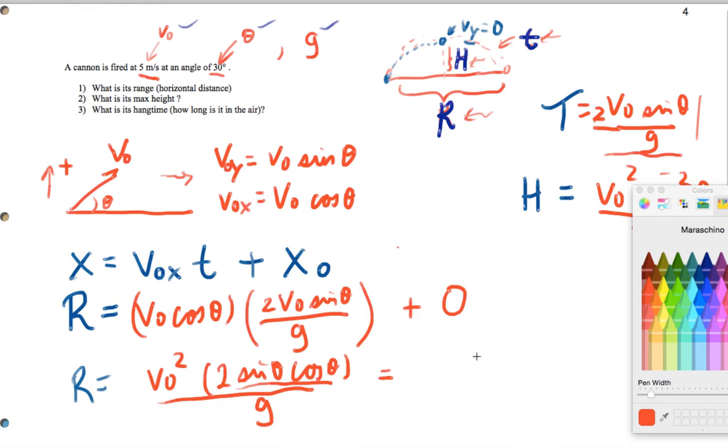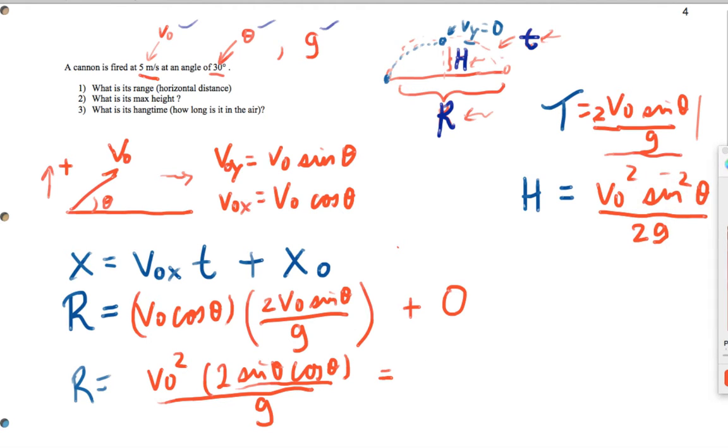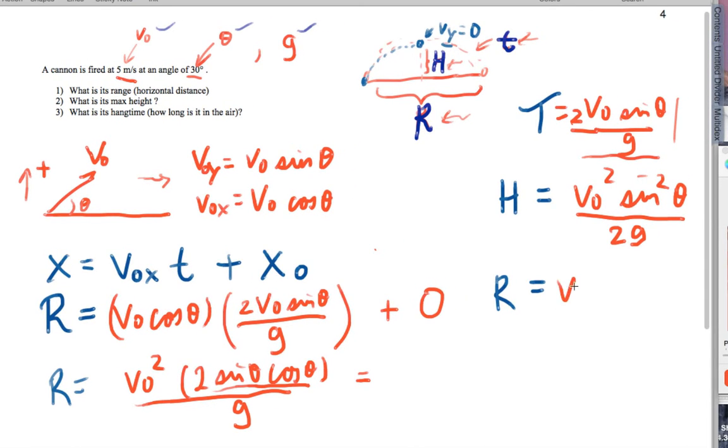using a trig identity, and we get our range as r equals v naught squared sine of 2 theta over g.